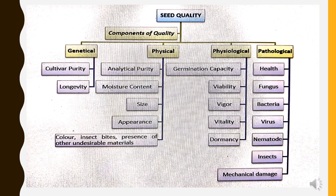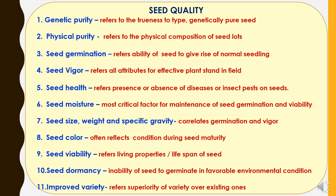So all these parameters confirm the seed quality, and to ensure this we have to go for seed testing. Here we have shown the seed quality parameters. First is genetic purity, which refers to the trueness to type of genetically pure seed. Second is physical purity, which refers to the physical composition of seed lots. Third is seed germination, which refers to the ability of seed to give rise to normal seedlings. Fourth is seed vigor, which refers to all attributes for effective plant stand in the field. Then seed health refers to the presence or absence of diseases or insect pests on seeds.